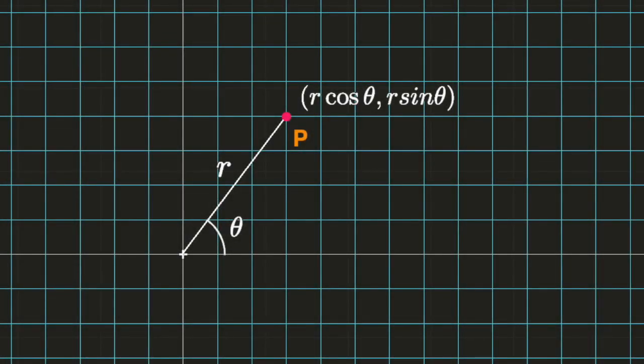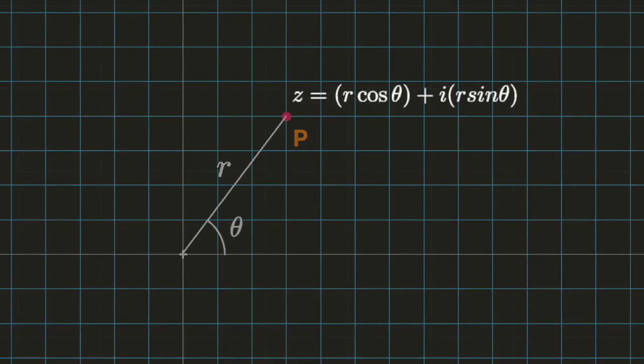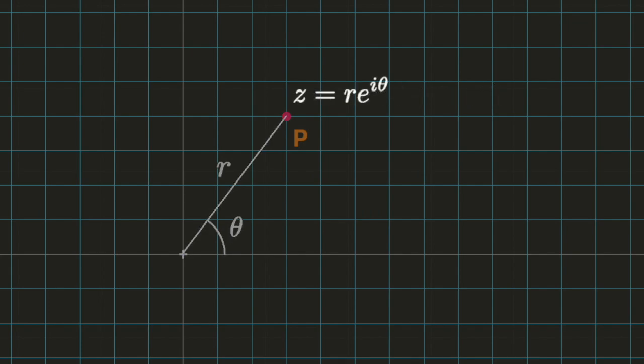It's also possible to use polar coordinates to represent the point p, where r is the distance between p and the origin, and theta is the angle with the x-axis. Writing out z in terms of its x and y components, factoring out r, and then applying the famous Euler formula, we arrive at the polar form of complex numbers.